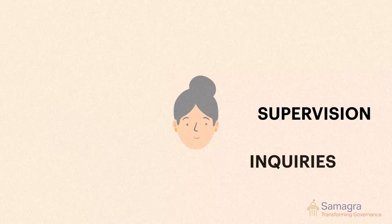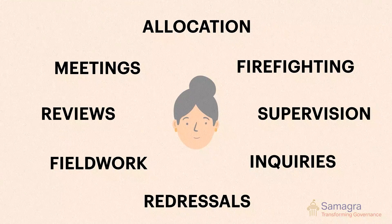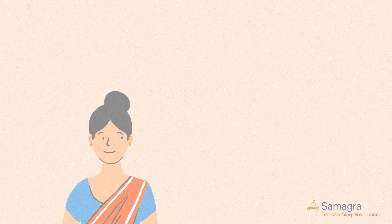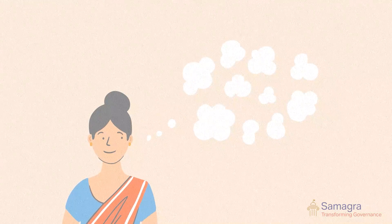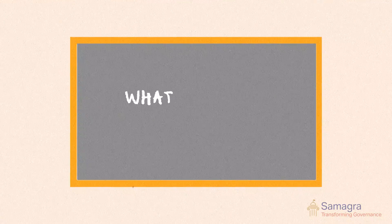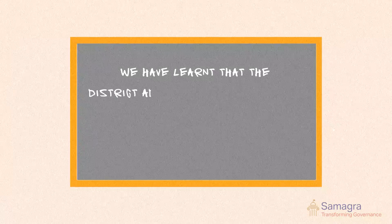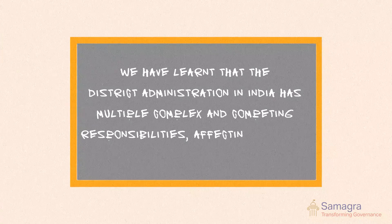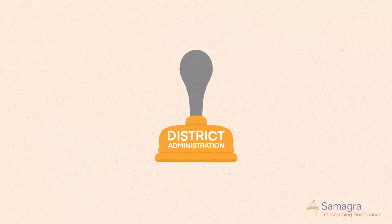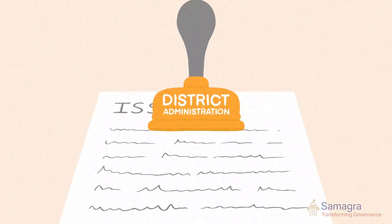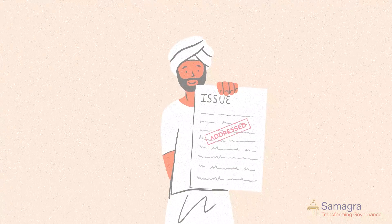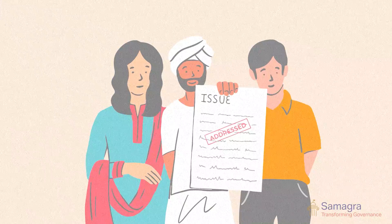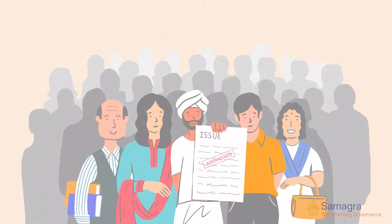Given the expanse of responsibilities that rest with the DC, it is not surprising that much of her time remains reactive to the mandates of the state government — fire-fighting when unexpected events occur, with little time to be creative in designing solutions to governance problems. We have learned that the district administration in India has multiple complex and competing responsibilities affecting lakhs of citizens. But with great power comes responsibility, and with great responsibility, even greater respect — from the world's greatest client, the citizen. And this is what we mean by district administration.